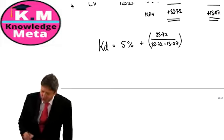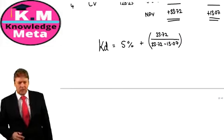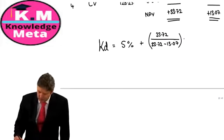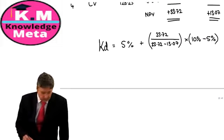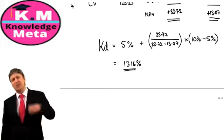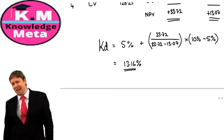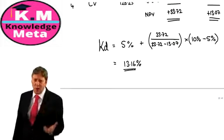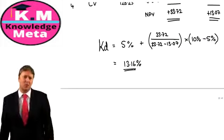KD = 5 + [33.72 / (33.72 − 13.07)] × (10 − 5), giving KD of approximately 13.16%. It's not perfect — ideally we'd use higher trial rates — but from an ACCA perspective it's good enough to use in the next part of the computation.